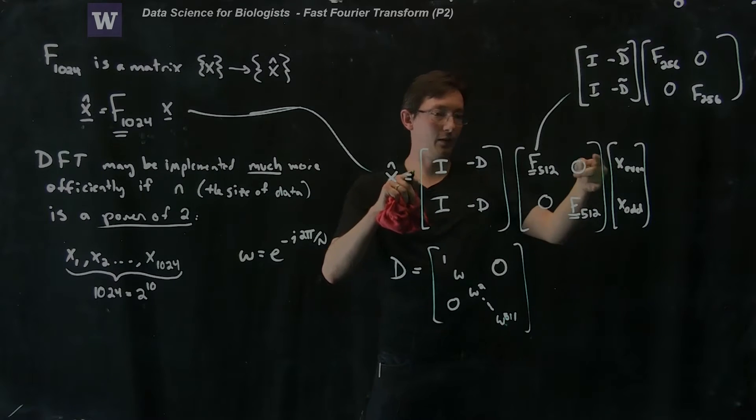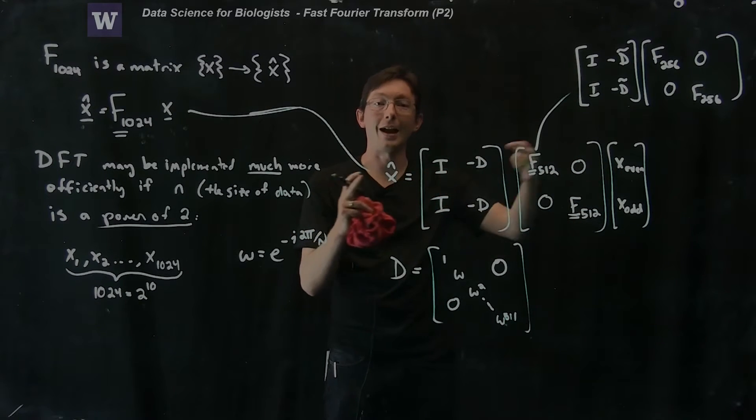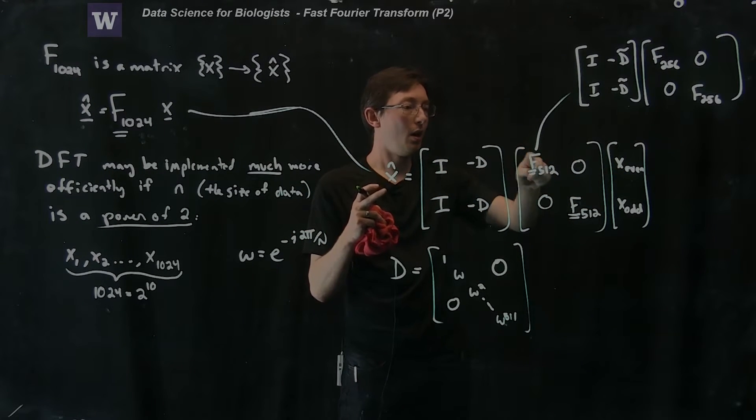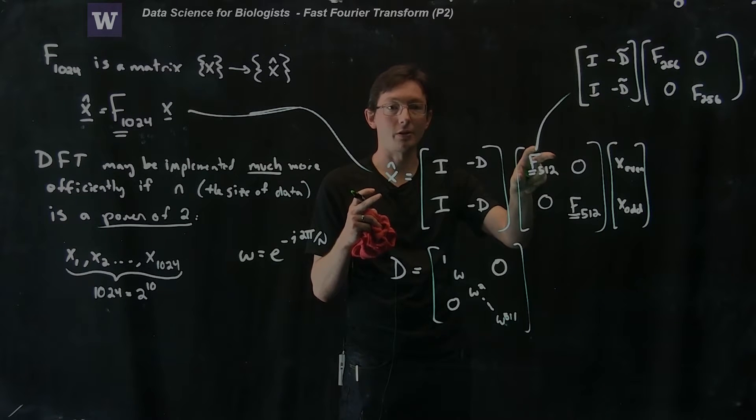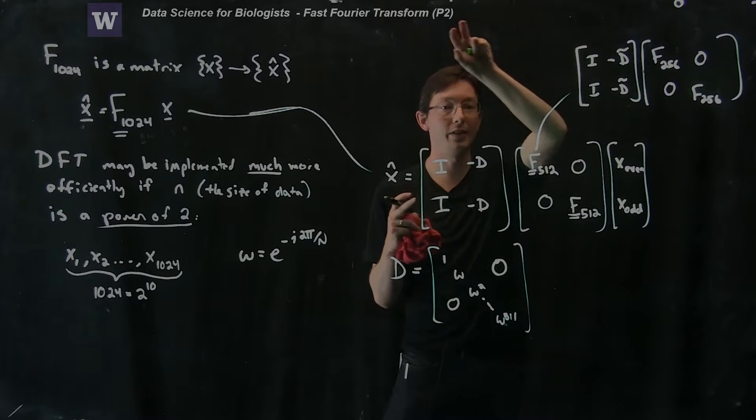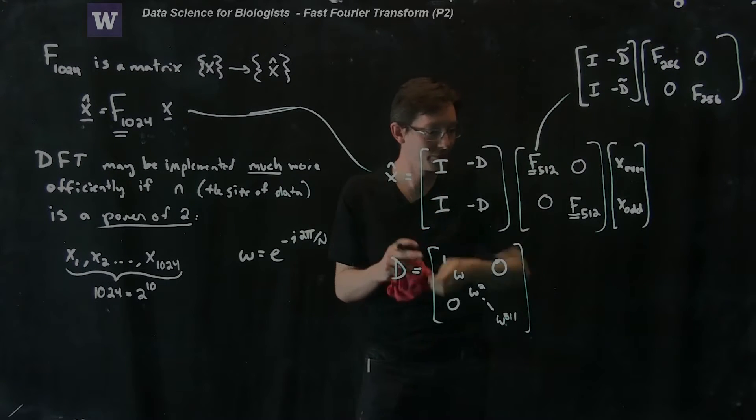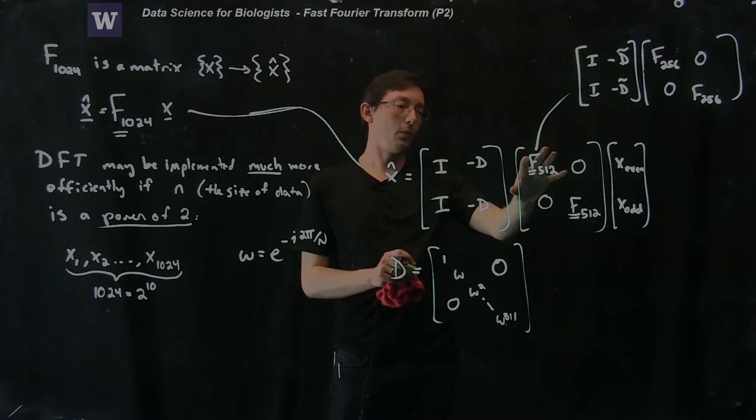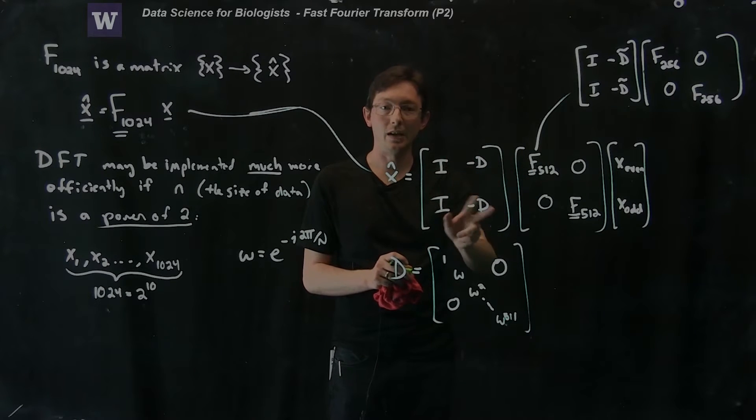This is almost like a fractal geometry of, the substructure of each of these is a diagonal, a block diagonal matrix. And the substructure of this is another F128, F128.